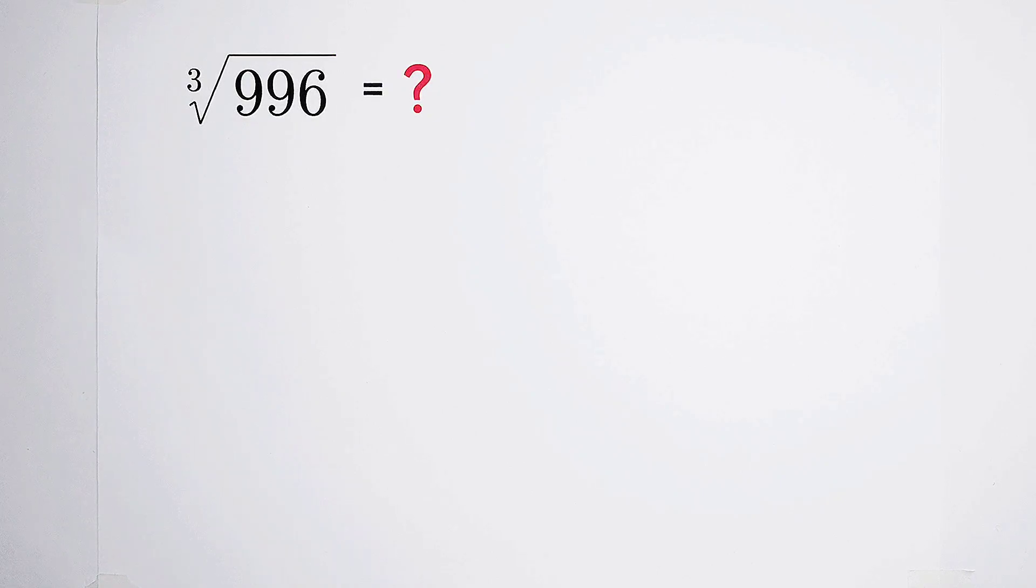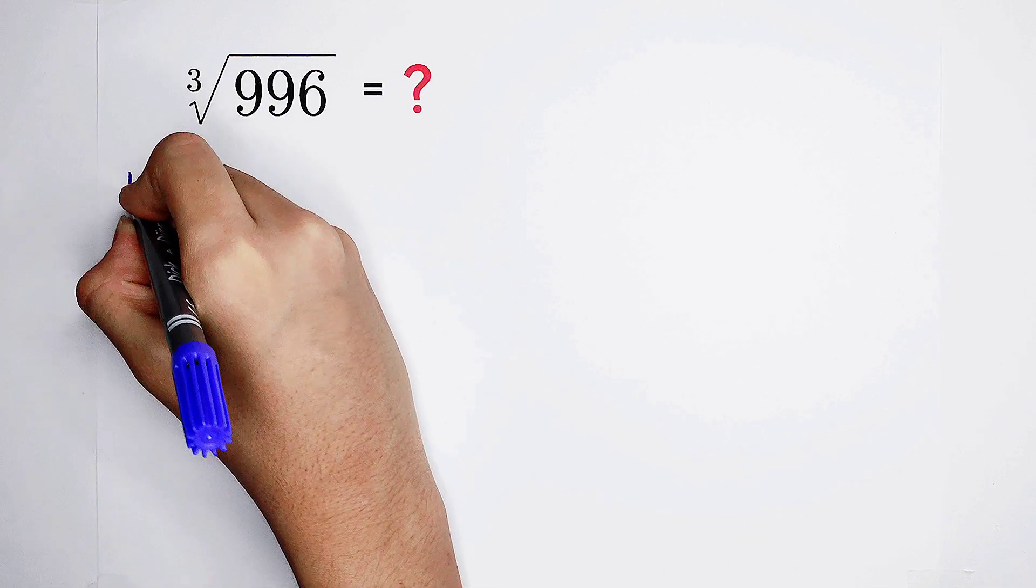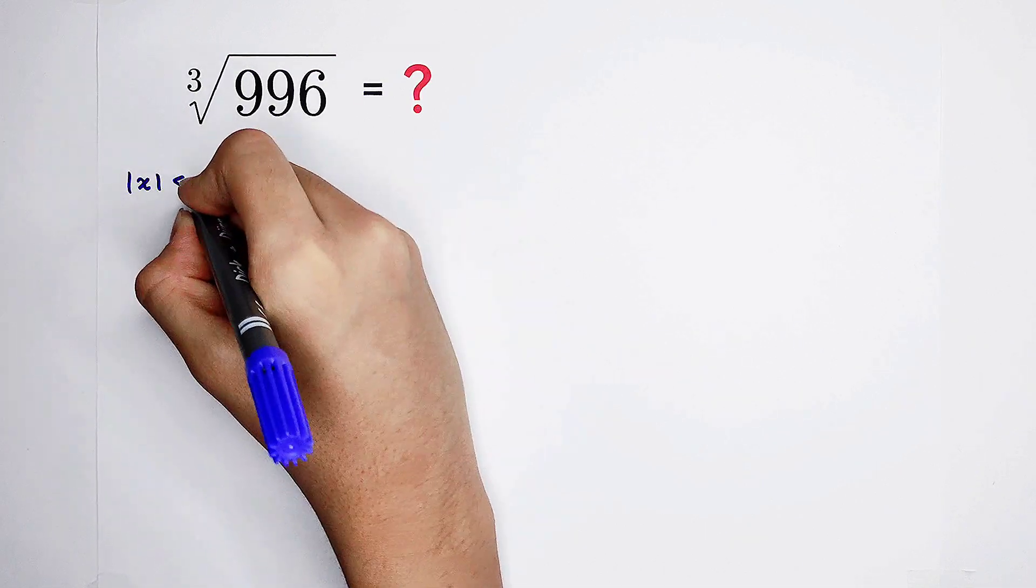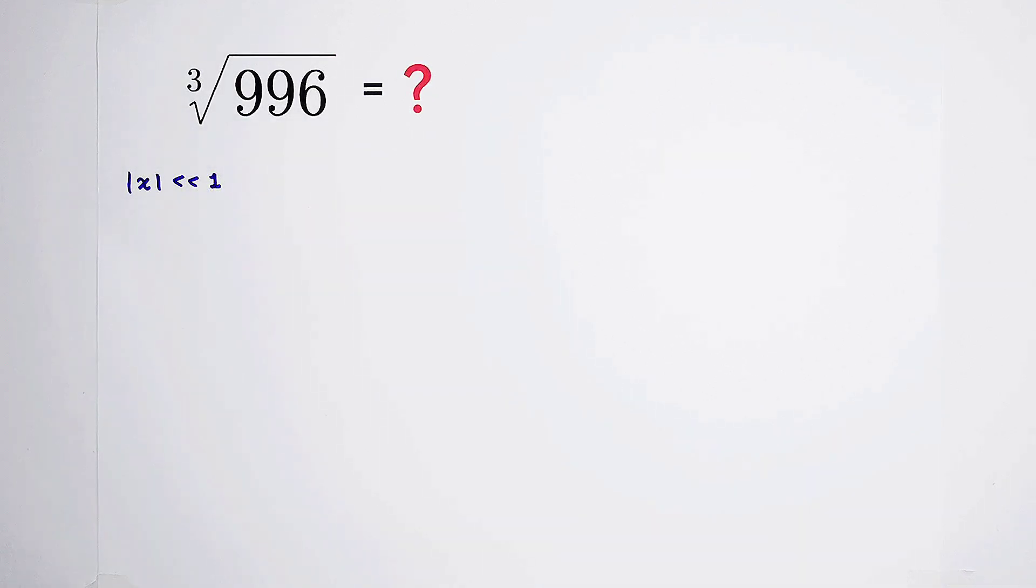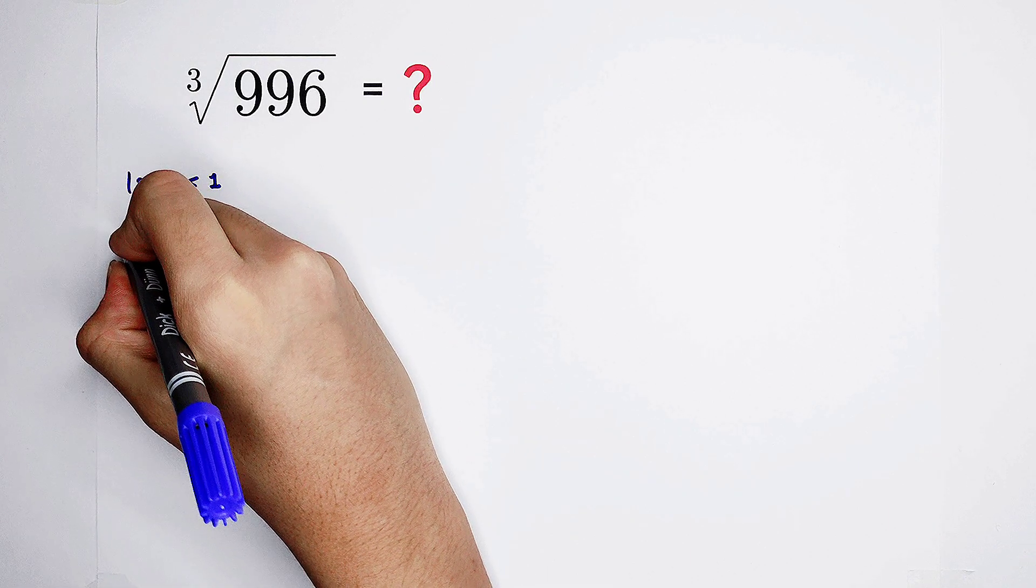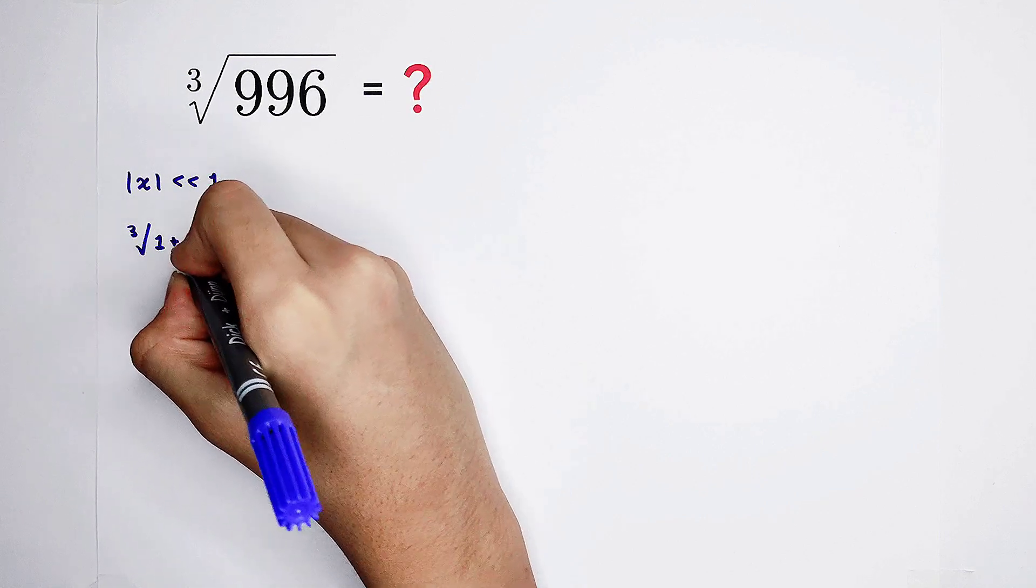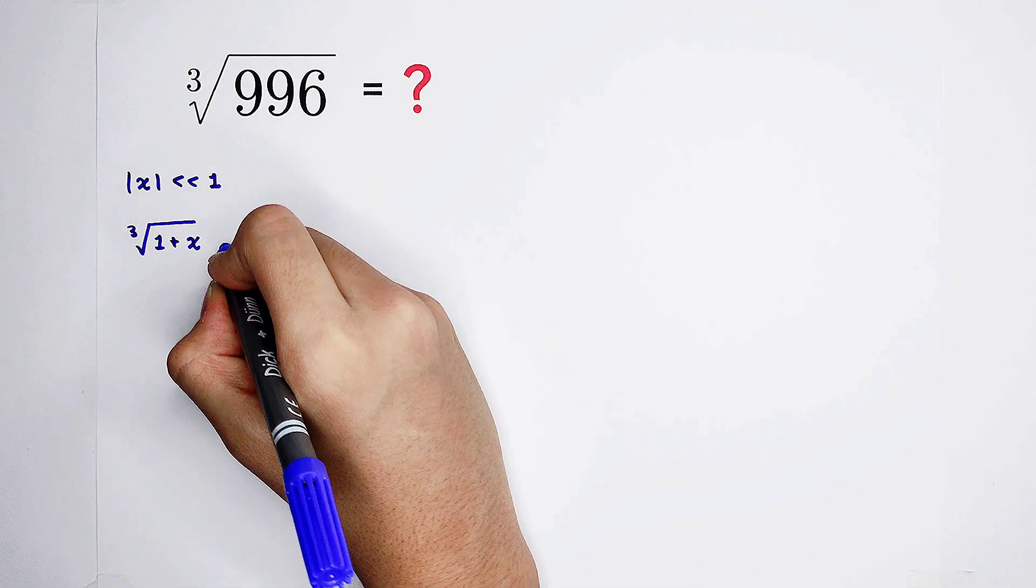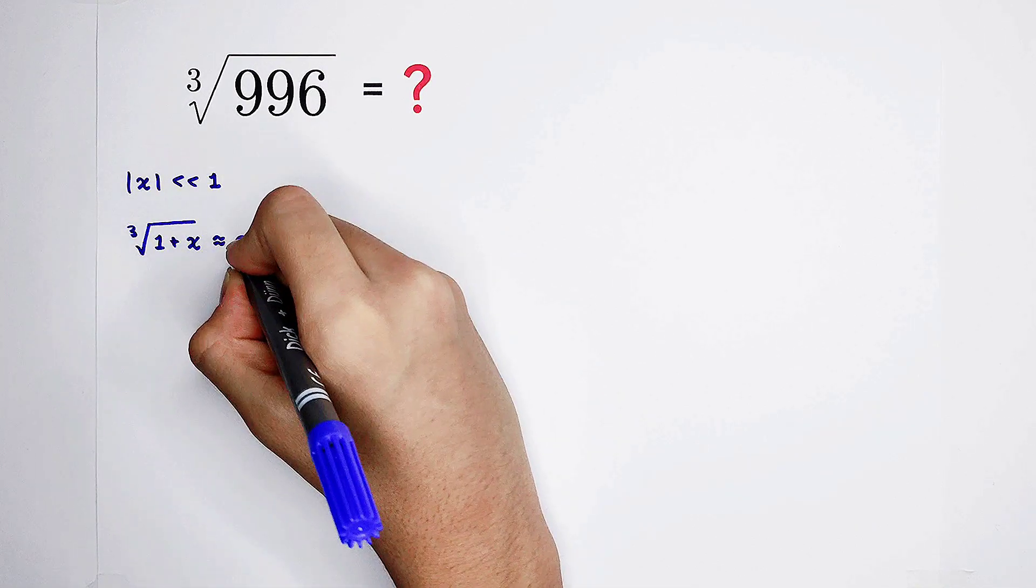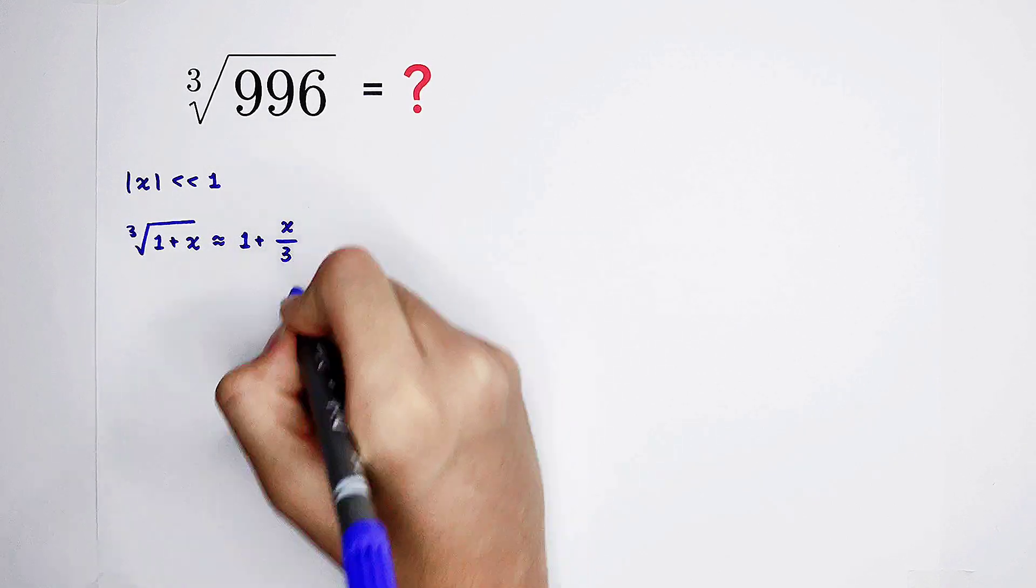There is a wonderful approximation. If the absolute value of x is much smaller than 1, then this will be always true. So, the third root of 1 plus x will be approximately equal to 1 plus x over 3.